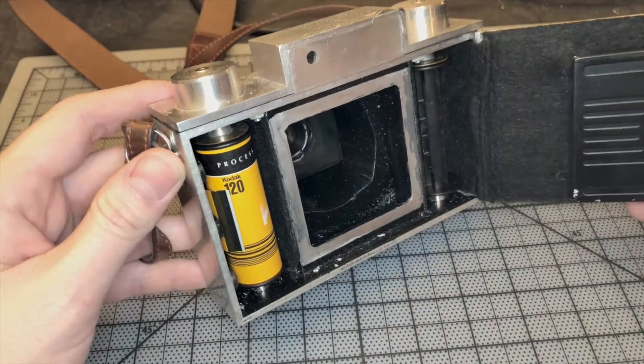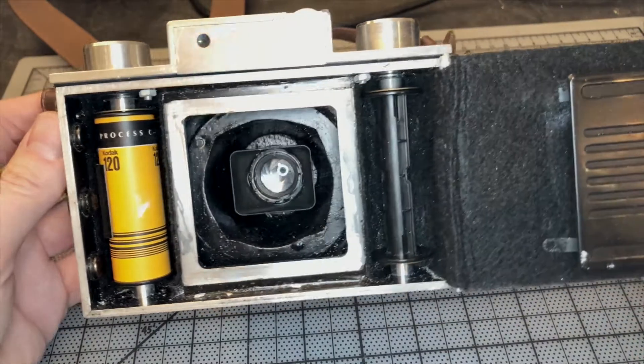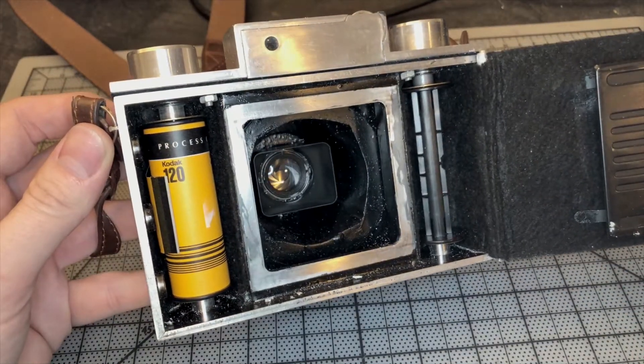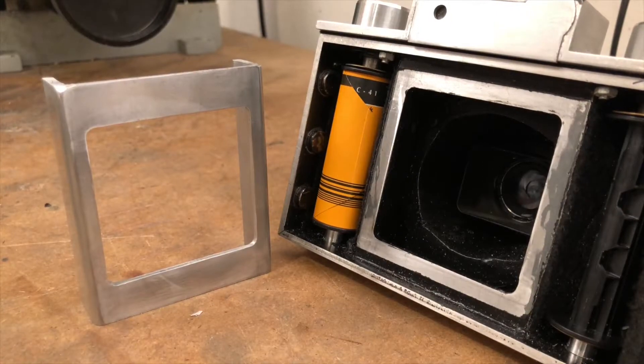Here you can see the film plane from my previous camera. Not very pretty, is it? This one was braised together. For the one I'm making now, I wanted to take it a step further and weld it together, making it much stronger and hopefully more accurate.